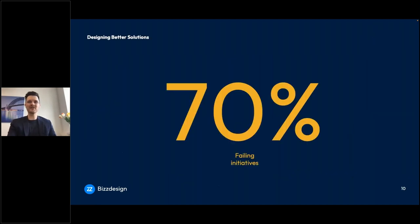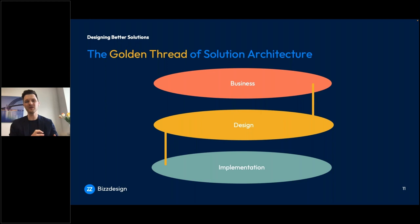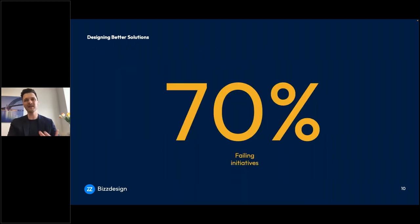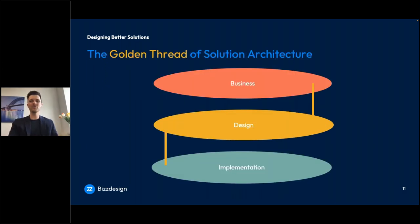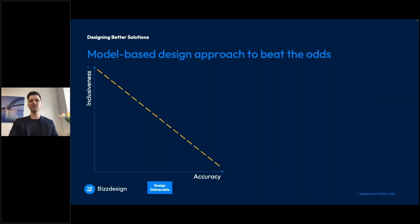Still 70% failure rate of change initiatives — how can we turn this around? I think it's important that we get comfortable with the definition of solution architecture as a golden thread for change. I really believe that design plays a very social role in change processes by bringing in all the information and communication needed. One of the leading causes for that 70% number is a lack of information and communication. We at BizDesign believe that a model-based approach for your design work can really beat the odds and turn this failure rate around.